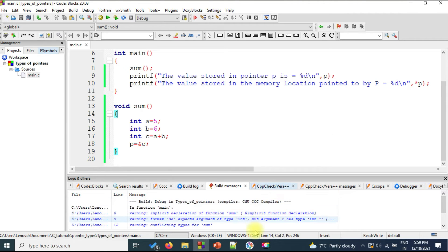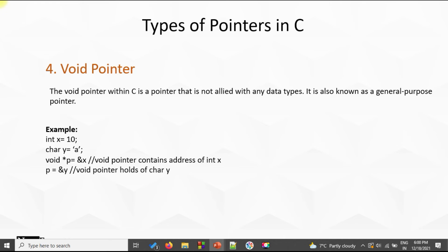The next kind is the void pointer. The void pointer in C is a pointer that is not associated with any data type. So we can have a void pointer and point it to an integer, a character, or a float — unlike the typed pointers we have discussed so far. If we declare a pointer of type int it can only point to an integer; if type char, only to a character. But void pointers can point to any data type — they are also known as general purpose pointers.